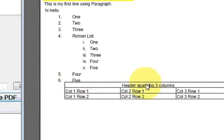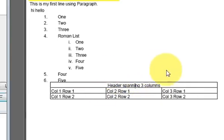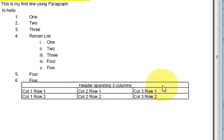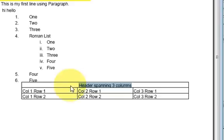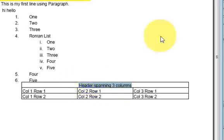A plain header doesn't look very good. Sometimes you need to change the font and sometimes you need to change the color of the cell as well. I will show you how to change the font and the background color of this header — though this code will apply to any cell.